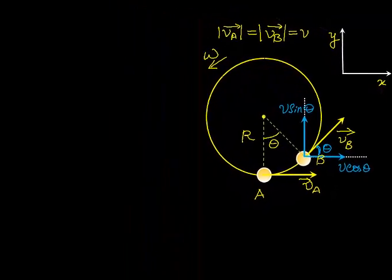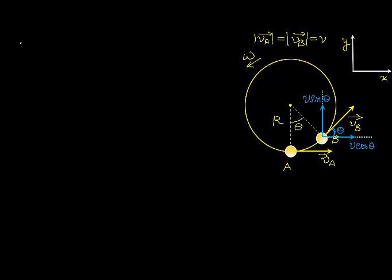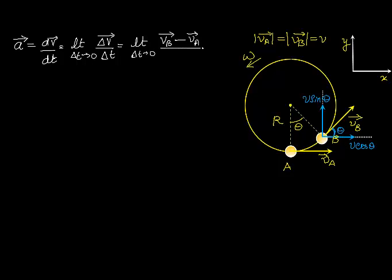And we can start deriving the expression. So let's look at acceleration. Instantaneous acceleration is dV over dT, which I will write as limit delta t tends to zero, delta V divided by delta t, which becomes limit delta t tends to zero, the final velocity vector, which is VB, minus the initial velocity vector, which is VA, divided by the time it took to go from A to B, which I call as delta T.